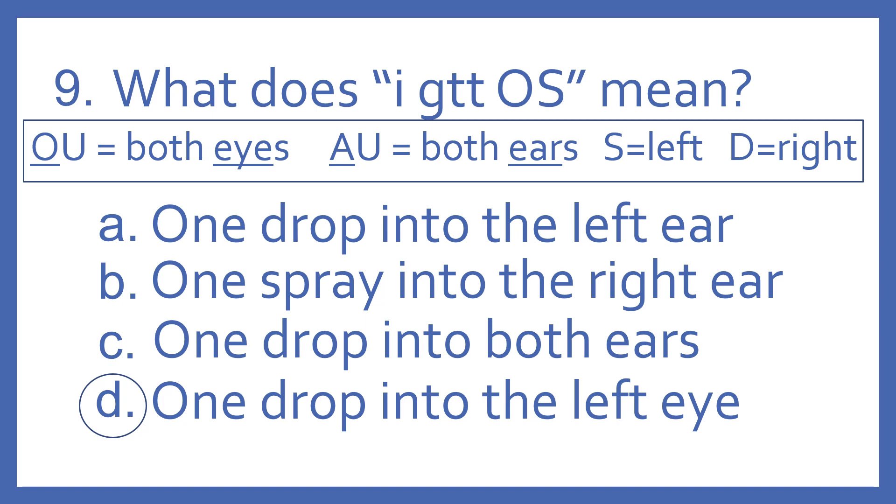And then if it has an S, it's going to be the left, and a D will be the right. So OS would be the left eye, OD would be the right eye, AS would be the left ear, and AD would be the right ear.